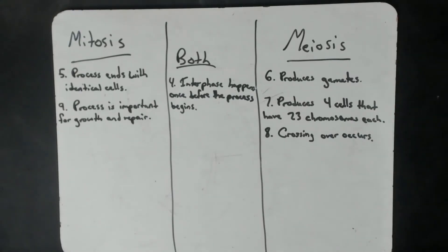Six produces gametes. Remember, gametes are the reproductive cells like sperm and eggs. And that's going to be produced by meiosis. Seven produces four cells that have 23 chromosomes each. Again, that's meiosis. Eight, crossing over occurs. Remember, crossing over is part of what helps us with our genetic variability, which is going to be important for meiosis, and that's when it's going to happen.